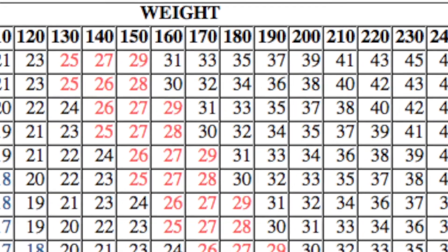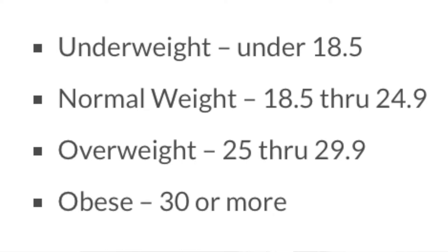The BMI is a convenient tool when making broad categorizations about weight. Some of these categorizations include whether you are underweight, normal weight, overweight, or obese. When we say body mass, we're talking about muscle, fat, and bone all added together, divided by the height. The major adult BMI classifications are: underweight is a BMI under 18.5, normal weight is 18.5 through 24.9, overweight is 25 through 29.9, and obese is a BMI of 30 or more.